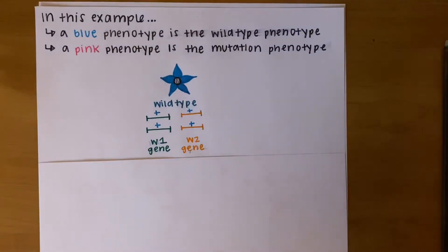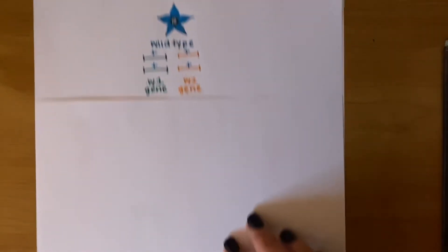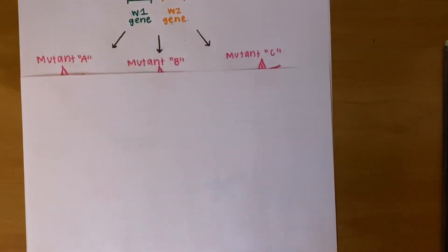Now, for heterogenic traits, there are multiple scenarios that could lead to the same mutant pink phenotype. I've drawn three different scenarios for us. Even if the mutations were in different genes, they can all contribute to the same pink phenotype.